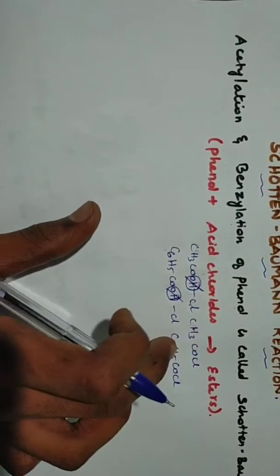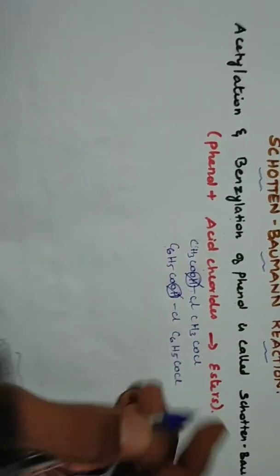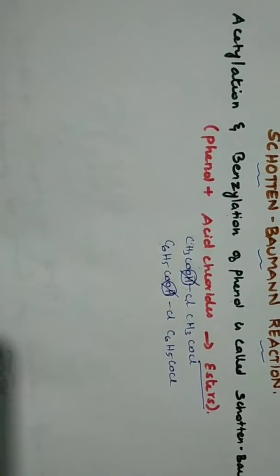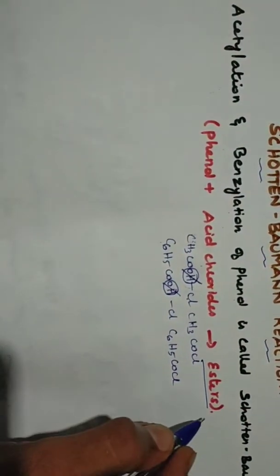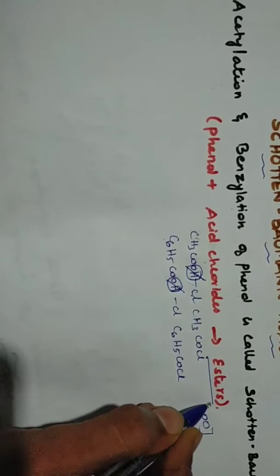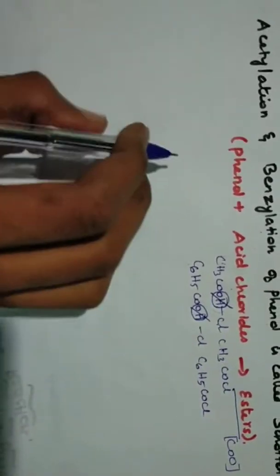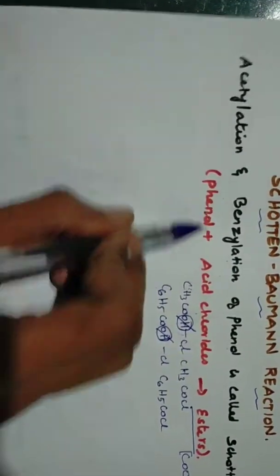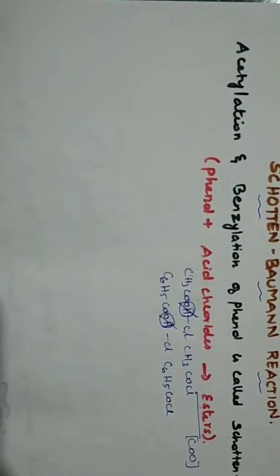So phenol, the two acid chloride react to esters. Esters is one of the general form. That is COO. That is the ester group. So now we have the reaction.